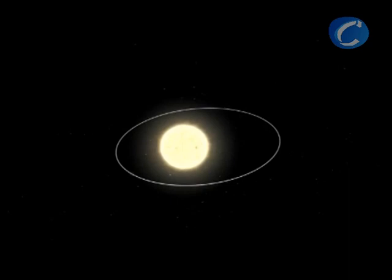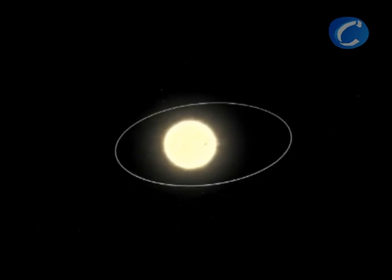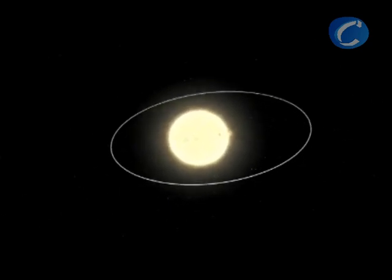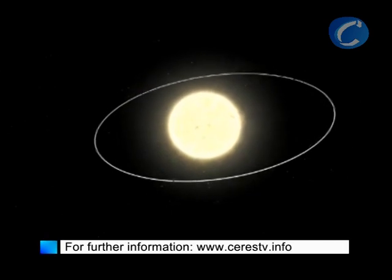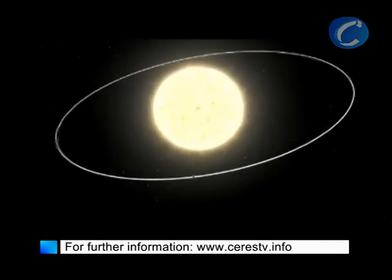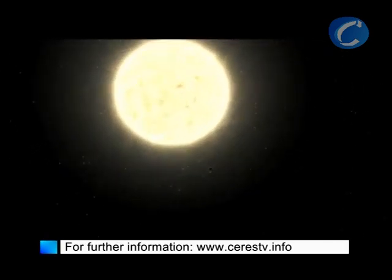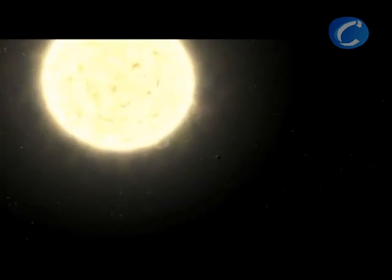HIP-13044b is near to its host star. At the closest point in its elliptical orbit it is less than one stellar diameter from the surface of the star, or only about 0.055 times the Sun-Earth distance.